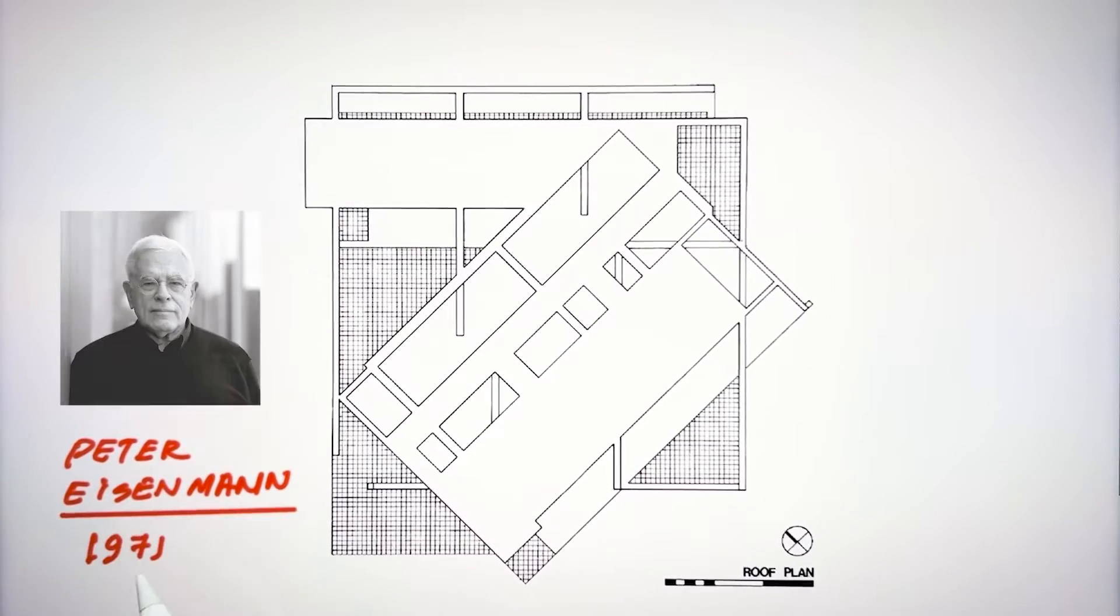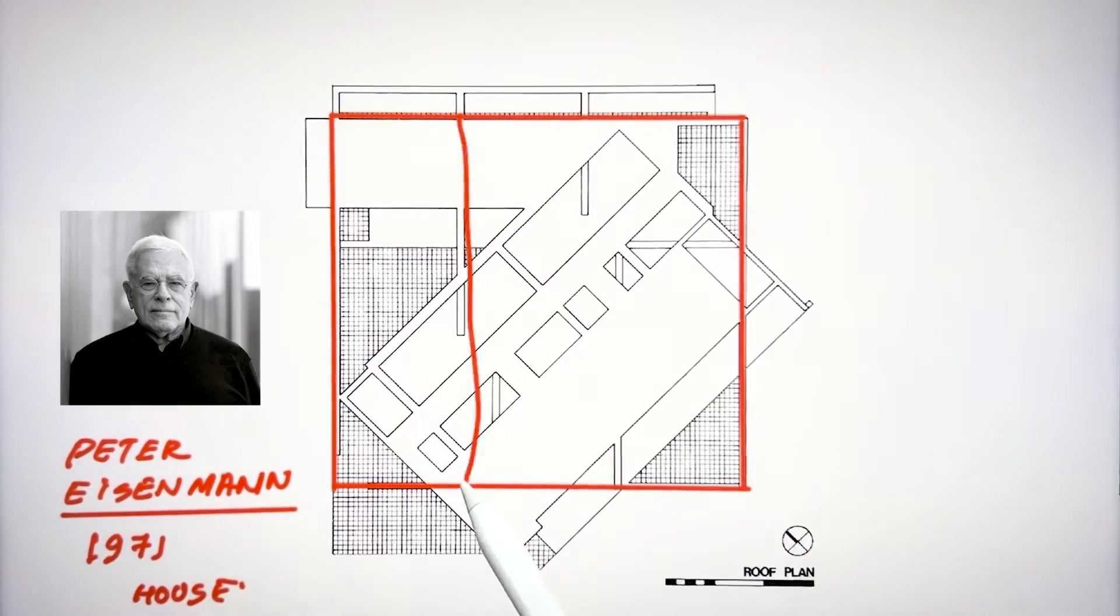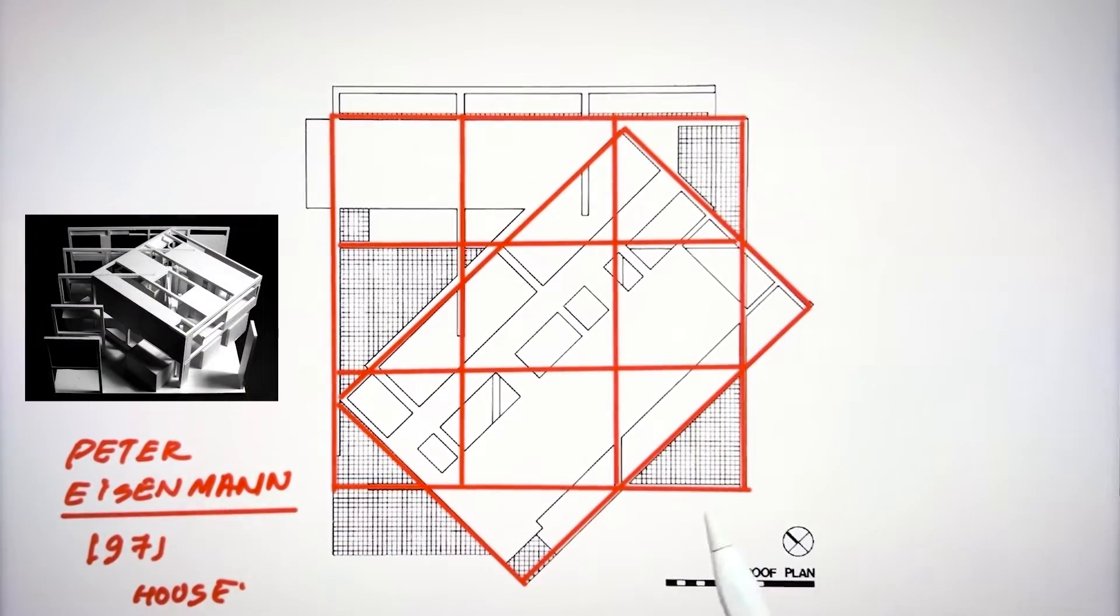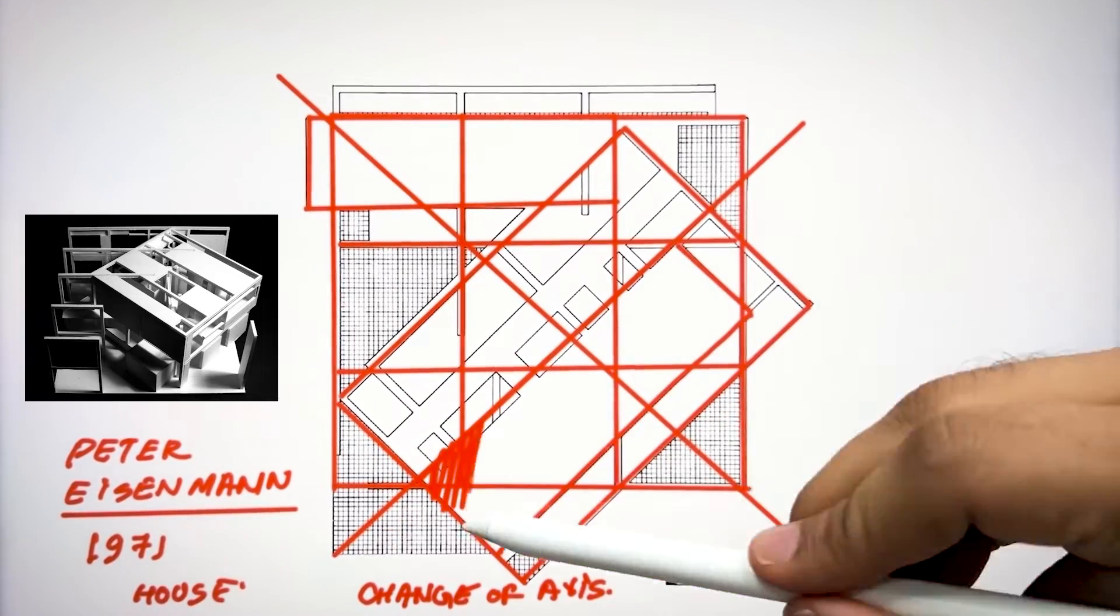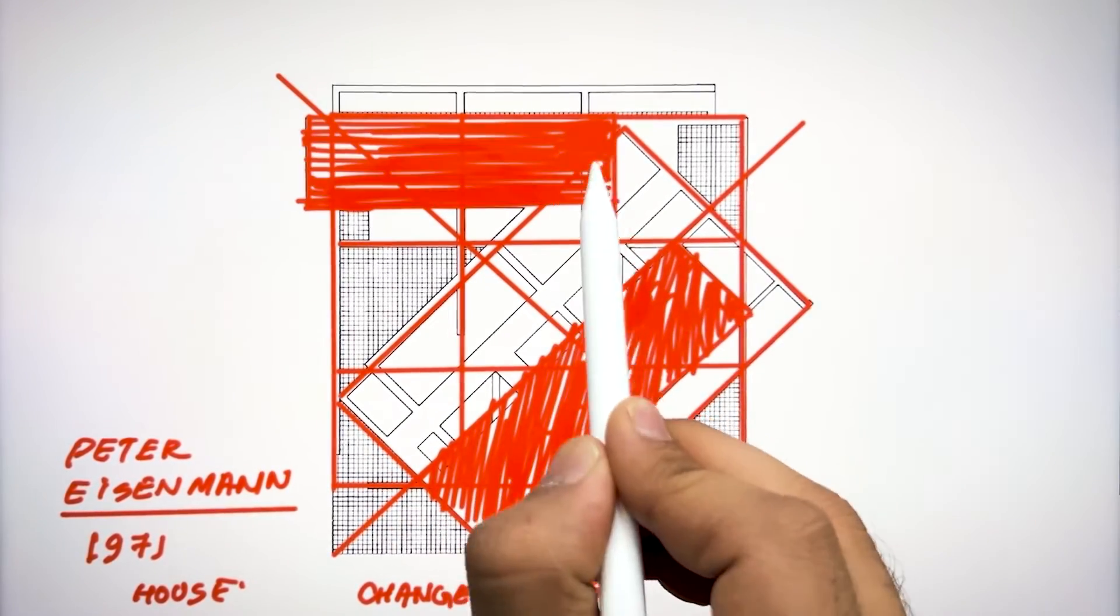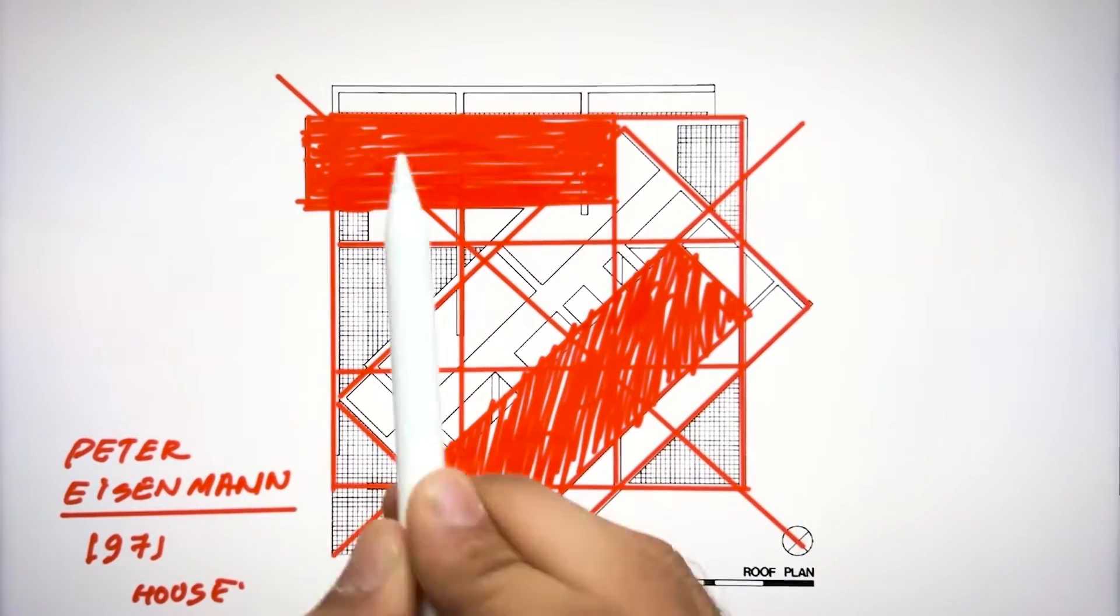Peter Eisenman also used the system of nine grid in his house in 1971. Here he changed the axis of the house and this orientation followed the concept of nine grid and added one more layer of complexity to the design. We can clearly see the difference of axis in the same system of nine grid.